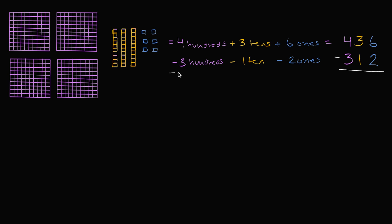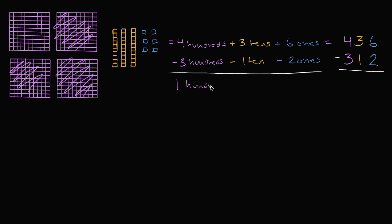So what's that going to do to us? We had four hundreds, we're taking away three hundreds. Let's take away one, two, and three hundreds — we're just left with one hundred. Four hundreds minus three hundreds is going to be one hundred. We had three tens, we're taking away one ten, so we're gonna be left with two tens.